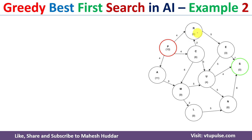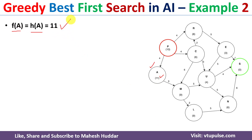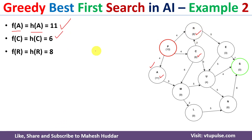From P there are three paths: P to R, P to C, and P to A. We calculate the f values for all three nodes. f(A) = h(A) = 11, f(C) = h(C) = 6, and f(R) = h(R) = 8. Among these three, C has the minimum value, so we select the path from P to C and continue from here.